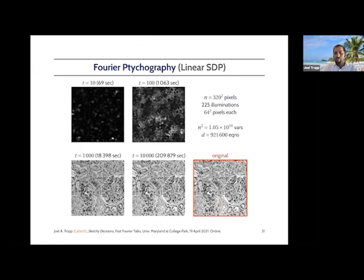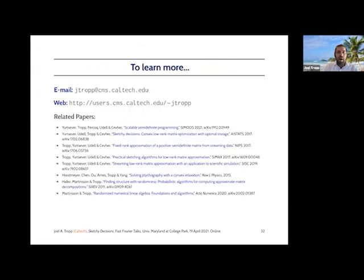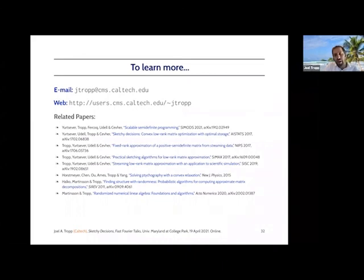To conclude, I hope that these ideas and extensions change the way that we look at some of these optimization problems and give us more optimism about what we can hope to achieve as computational scientists by being more creative and more careful about how we perform the optimization. These papers are all available on arXiv. Thank you, and I'll hang around if there are any more questions.